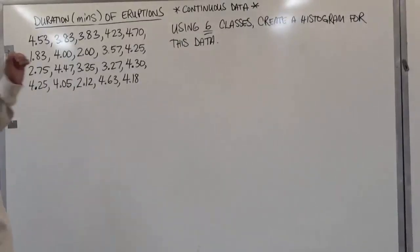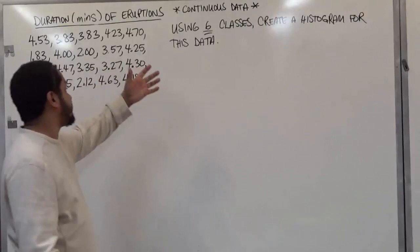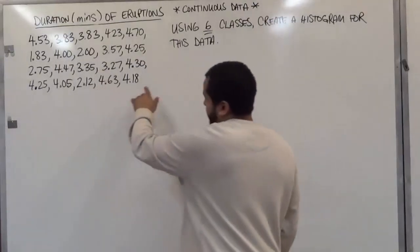This data is also continuous data. It's not regular data. Usually we have discrete values when making histograms. In this case we have decimal values.